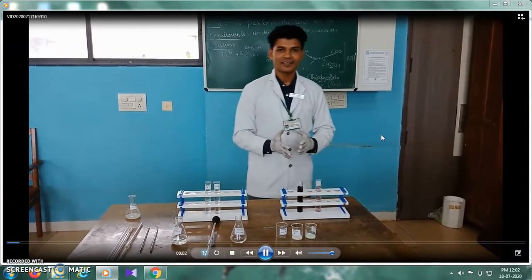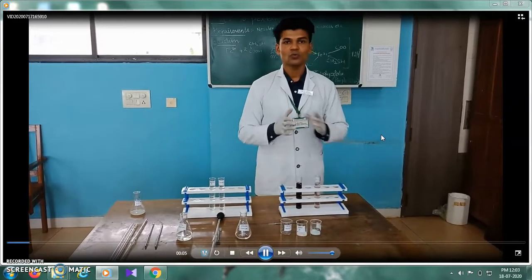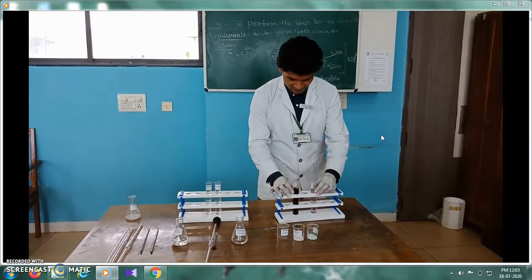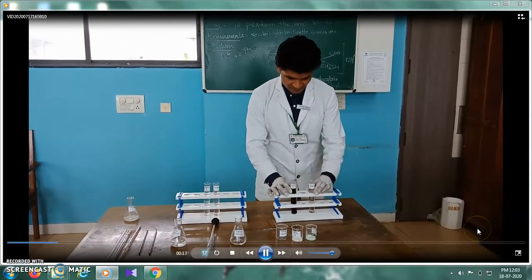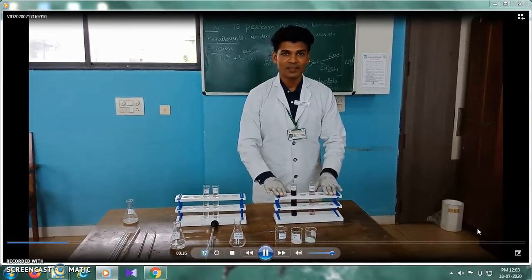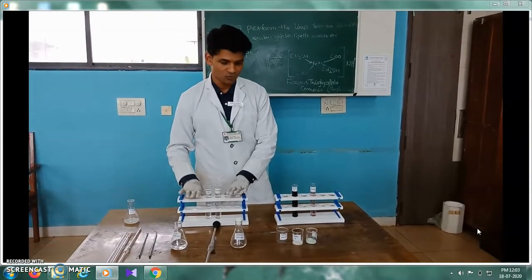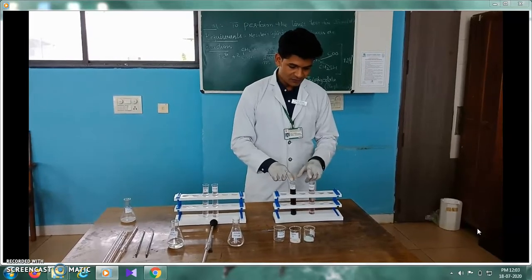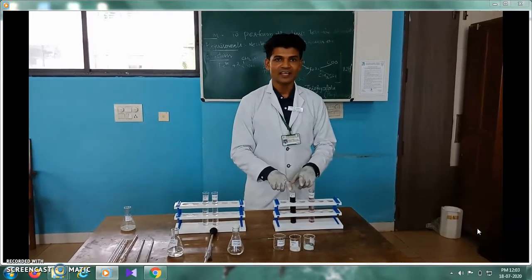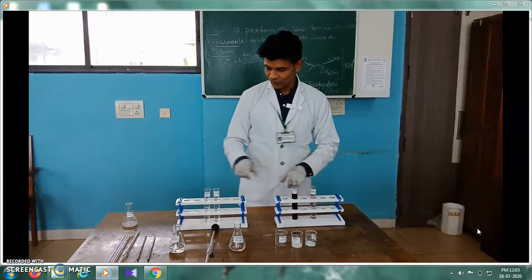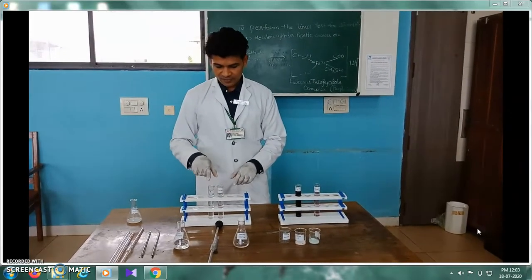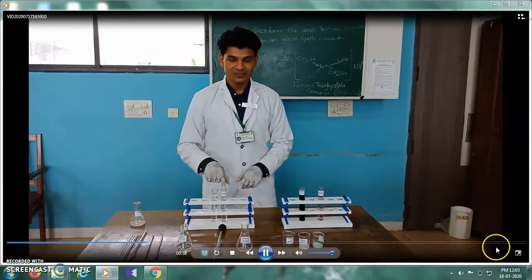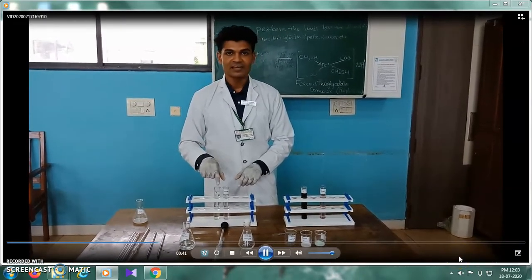Now we can see the color has developed. We perform the observation by comparing the standard Nessler cylinder with the sample Nessler cylinders. This is Sample A and this is the Sample B solution. We can see that the color formed in Sample A is actually more intense than the standard solution, whereas the color formed in the Sample B group is less intense — there is nearly no color — compared to the standard solution.